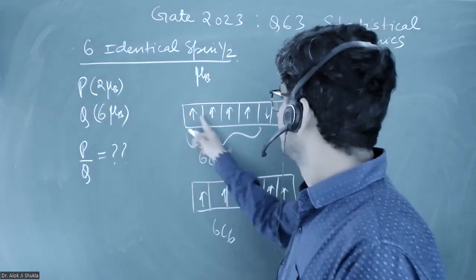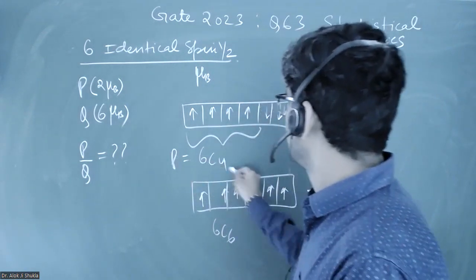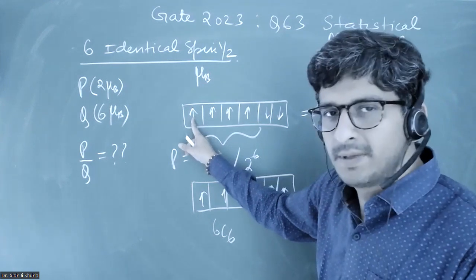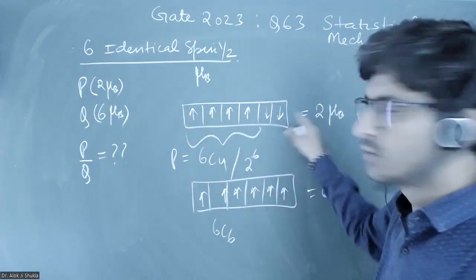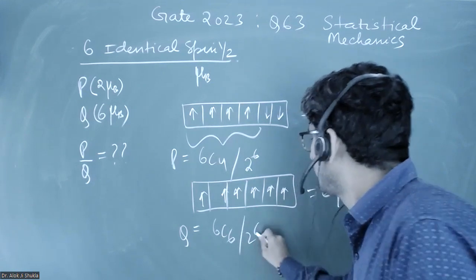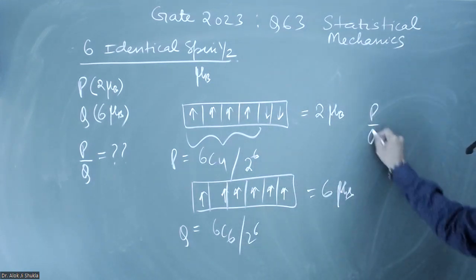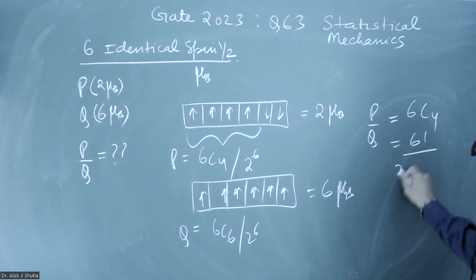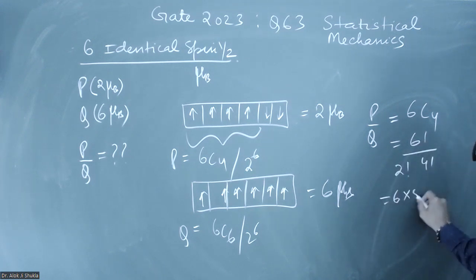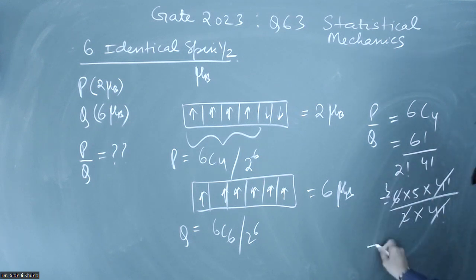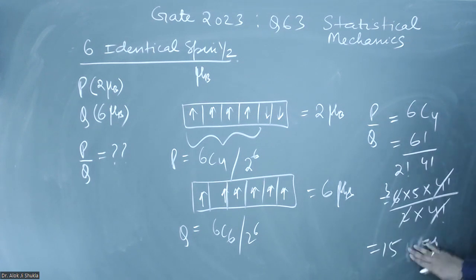So P equals 6C4 divided by 2^6 (the total number of microstates, since each spin can be up or down), and Q equals 6C6 divided by 2^6. Therefore P by Q equals 6C4, which is 6! divided by (2! × 4!) = (6 × 5 × 4!) / (2 × 4!) = 15. The ratio P by Q is 15.